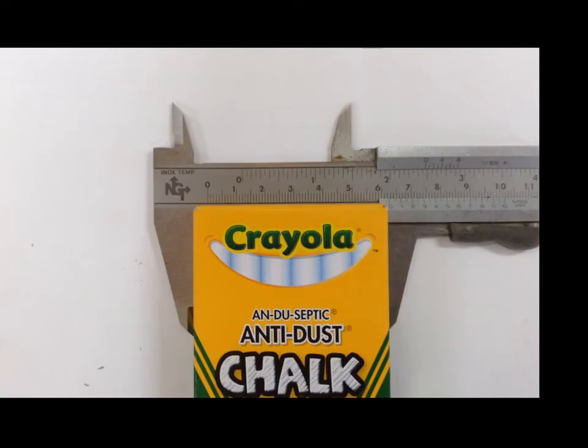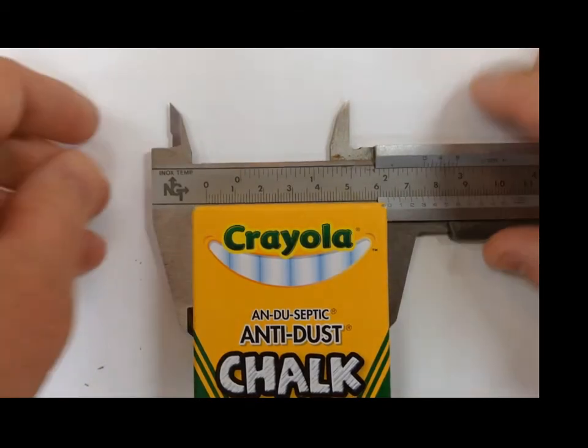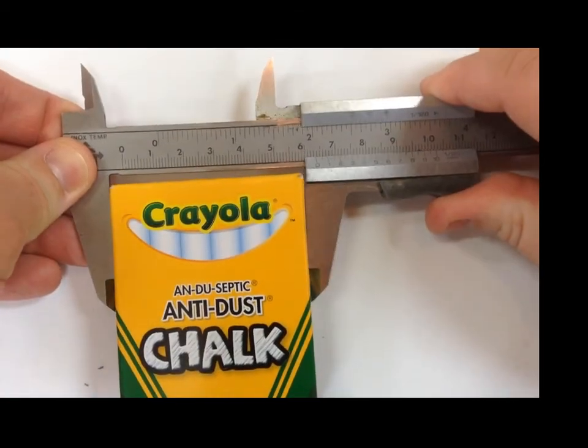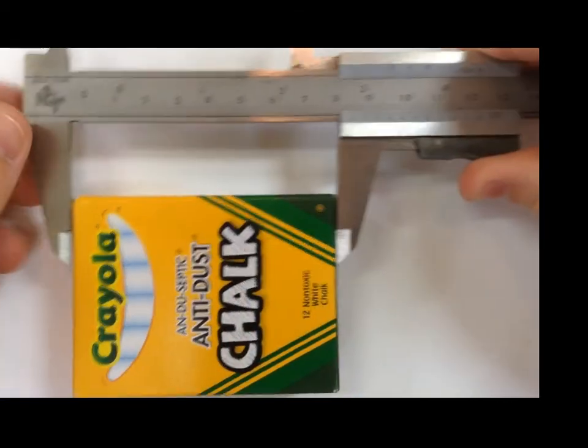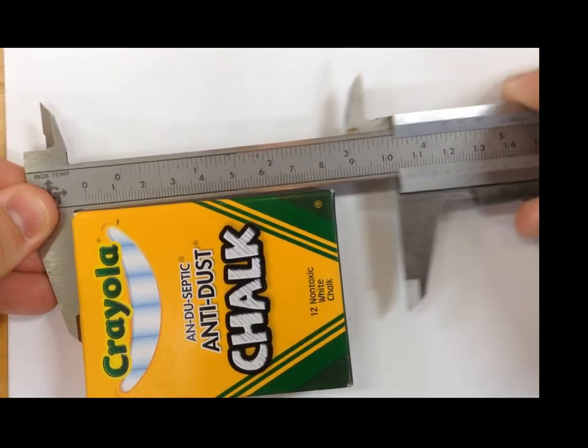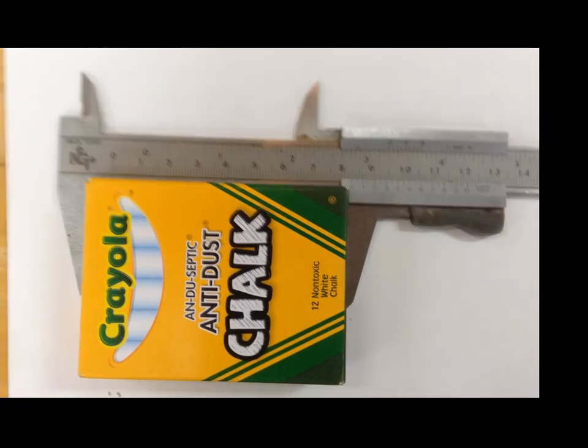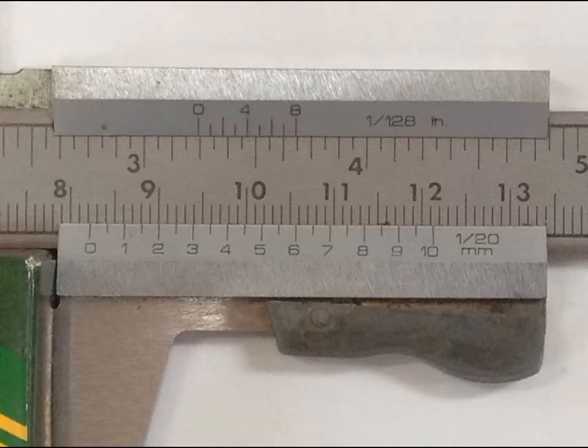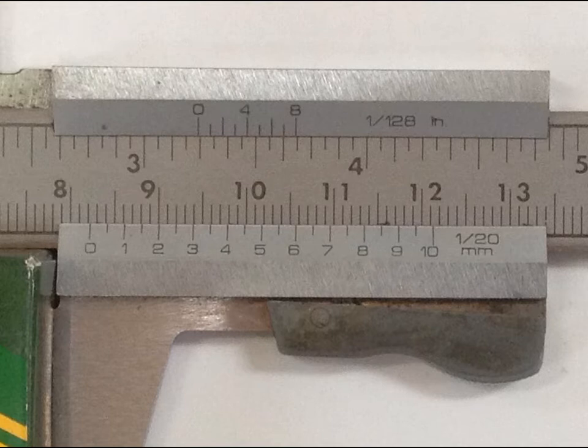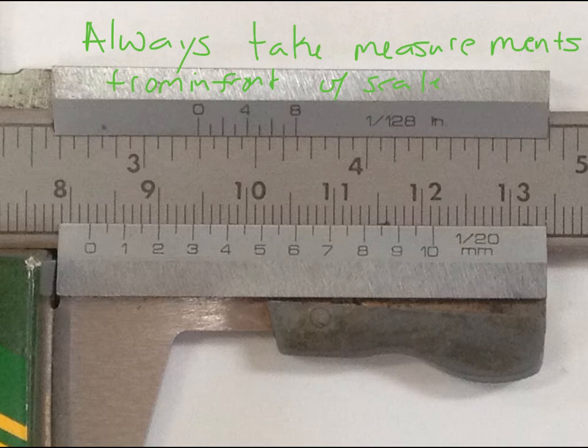We're going to take some more measurements. We're going to measure the height of this box. So again, we're going to grab the release latch, slide it undone, turn the box, push it snugly closed, and we are ready to take our measurements. Now, as we're taking this measurement, I want you to note that we are directly above the scale. You always want to be directly above the scale. I would like you to take time and measure this real quick. Pause the video, take a measurement, and then we'll see how we agree.